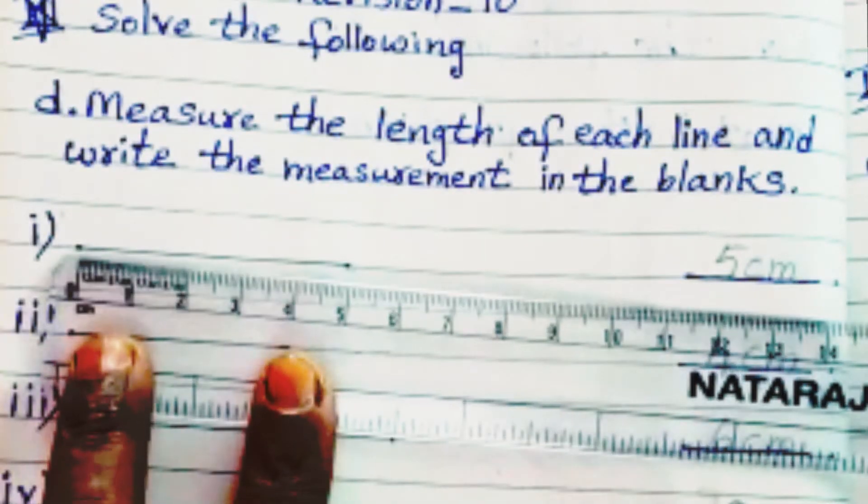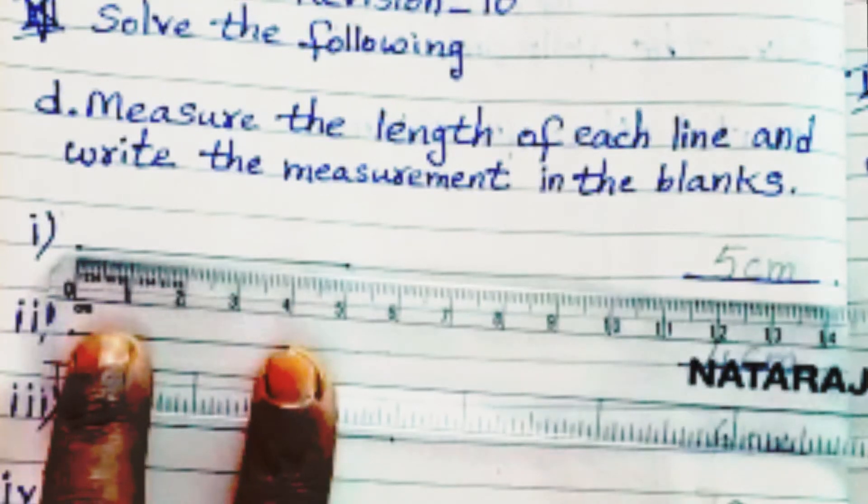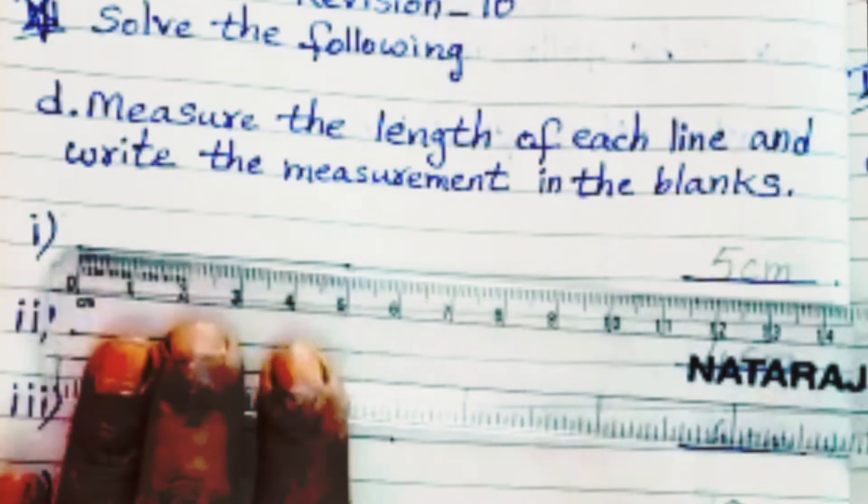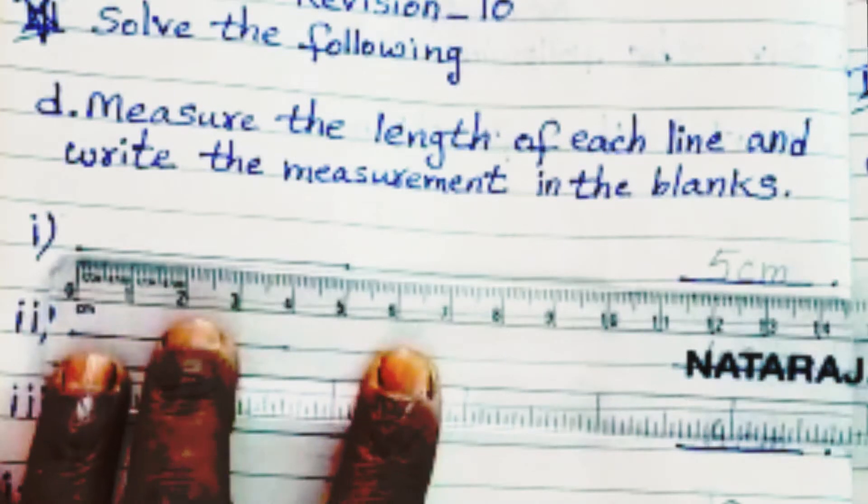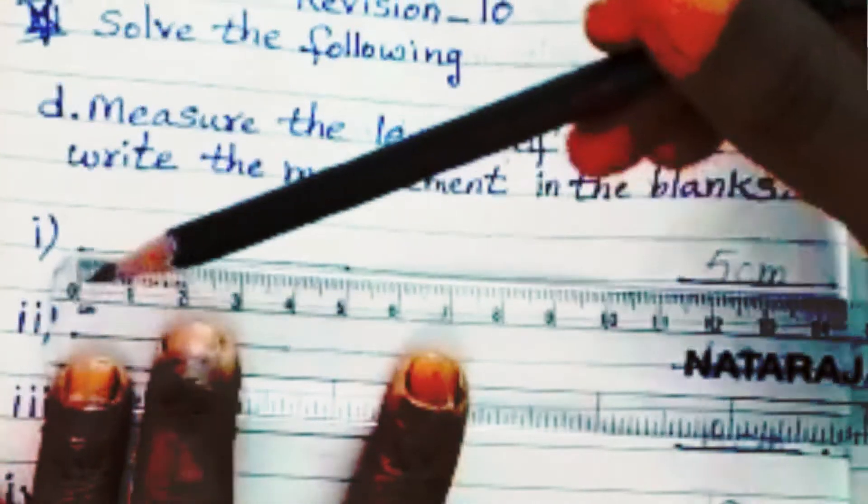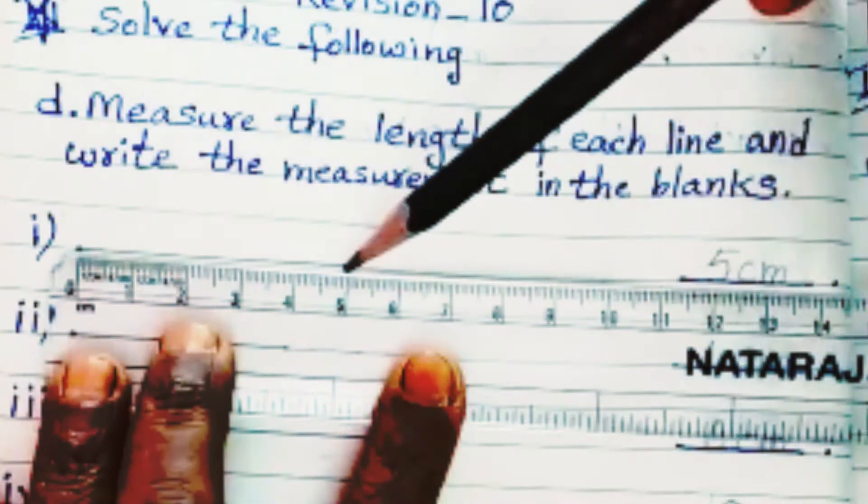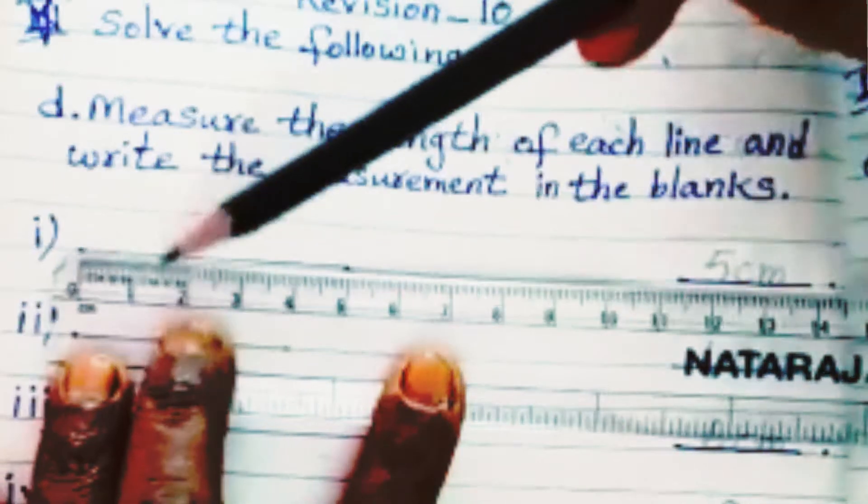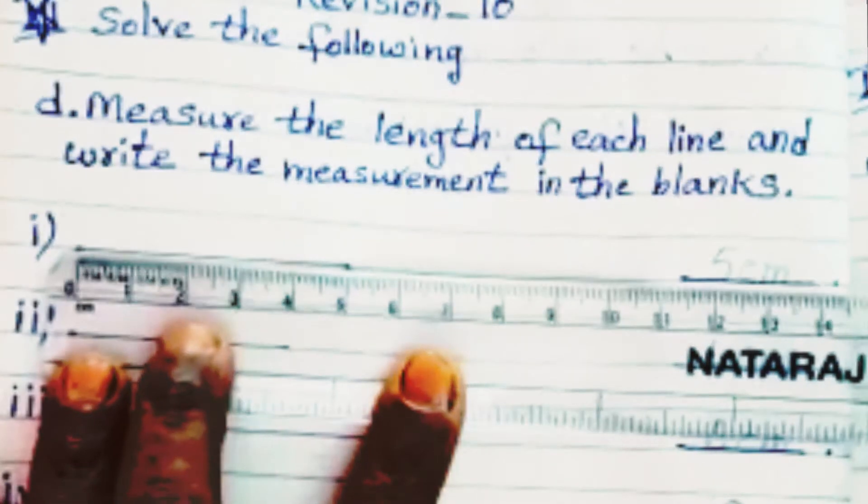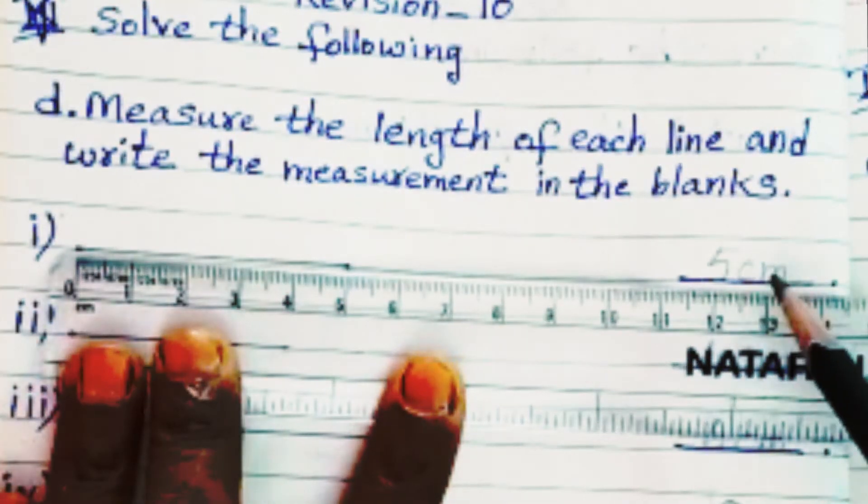Place the scale at the starting point of 0 and check the end point where it ends in the reading of the scale. See here, from 0 to 5 centimeters. So write the answer 5 centimeters in the blank.